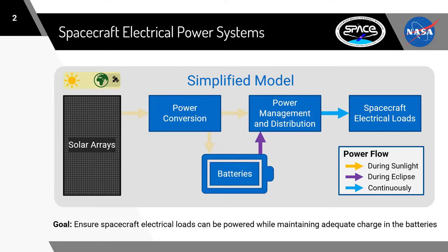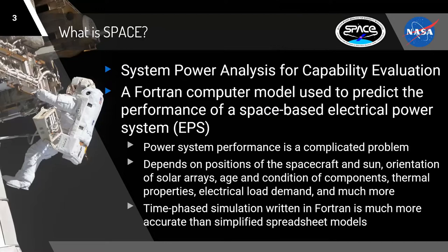This is a huge problem that has many complicated parameters that go into it. That is why our Fortran program, SPACE, comes in. It stands for the System Power Analysis for Capability Evaluation, and it's used to predict the performance of a space-based power system. In other words, it can determine whether the solar arrays, given all of the different factors that affect them, can produce enough power in a given scenario to support both the spacecraft electrical loads that must be powered at all times, as well as the batteries that will get the spacecraft through scenarios where the arrays don't see the sun. SPACE is an extremely detailed model for a highly complicated problem, and it is also much more accurate than the spreadsheet alternatives and has been validated with actual spacecraft power system data.